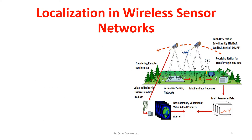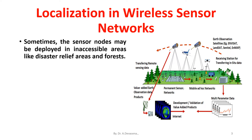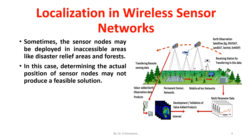Sometimes the sensor nodes may be deployed in inaccessible areas like disaster relief areas and forests. In this case, determining the actual position of sensor nodes may not produce a feasible solution. Therefore, efficient localization systems need to be adapted to provide positional information of the sensor nodes.